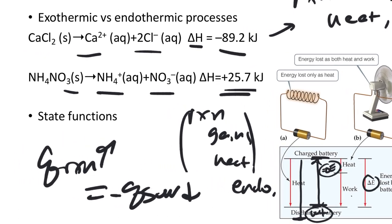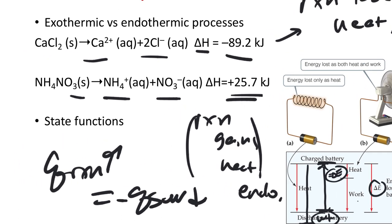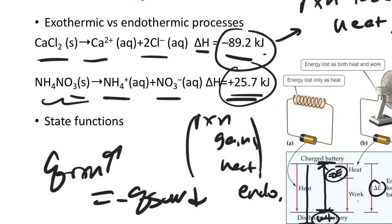Delta E is a constant for however much battery we have available — same thing with our reactions. Delta H for the calcium chloride reaction is 89.2 kilojoules per mole, and 25.7 kJ per mole for ammonium nitrate. This reaction given off 89.2 kilojoules in the container — there's no gas being created or destroyed, so it's essentially an open system. The system has 89.2 kilojoules of heat to give off to the surroundings, probably with zero work done, just releasing all that amount as heat.